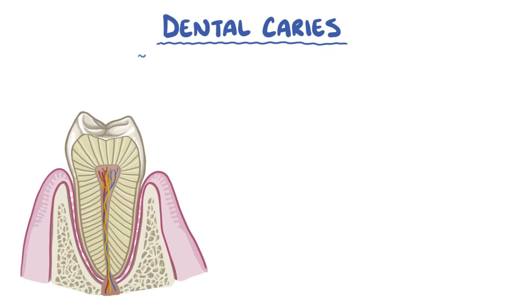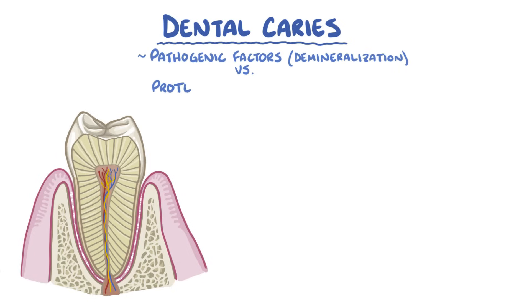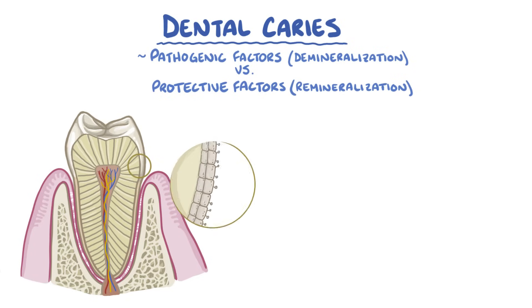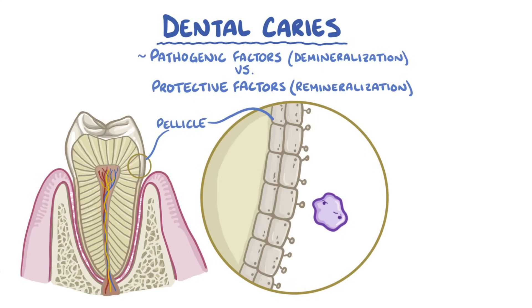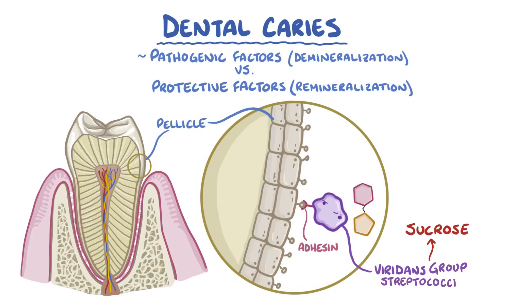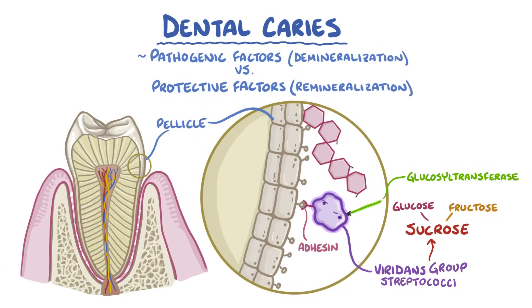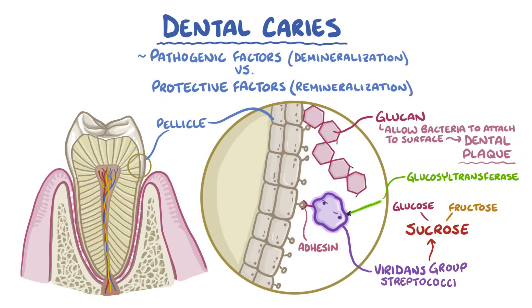When it comes to dental caries, there's a tug of war between the pathogenic factors that promote demineralization of the tooth and protective factors that promote remineralization. Normally, there's a layer called the pellicle that covers the tooth, and bacteria in the mouth like viridans group streptococci settle on that pellicle layer. These bacteria are called early colonizers, and they attach to the surfaces using bacterial surface proteins called adhesins. Because they're on the pellicle of the teeth, these bacteria come into contact with sucrose, which is a sugar found in various foods and drinks including table sugar. Sucrose has a glucose molecule bound to a fructose molecule, so the bacteria use an enzyme called glucosyltransferase to cut the bond between them, using the fructose for energy and adding glucose to a growing chain of glucose molecules called glucan. Glucans allow the bacteria to attach firmly to the surface of the tooth and form dental plaque, which is a sticky collection of bacteria, proteins from saliva, and dead cells from the lining of the mouth.